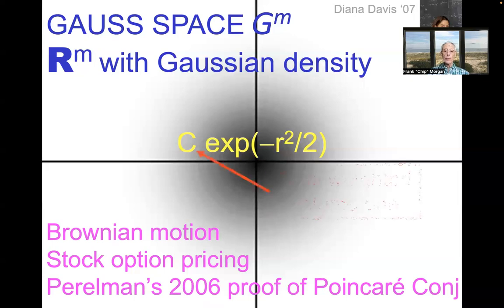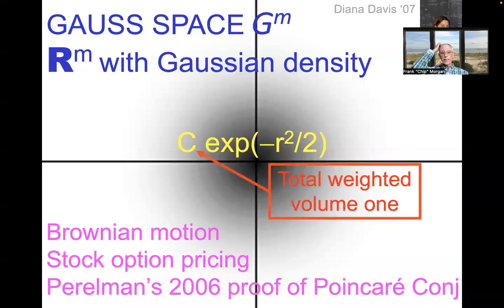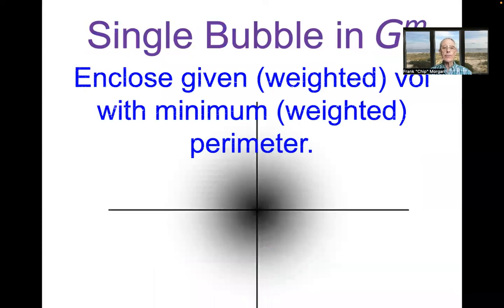So the single bubble problem here, oh, the constant there in front, is just chosen to make the total weighted volume of the space one. A big advantage that this space has over Euclidean space with its crazy infinite volume. So a space in that way already much easier to work with. Now, the single bubble problem here is to enclose given weighted volume with minimum weighted perimeter. So the Gaussian weighting applies both to the volume and the perimeter. So we'd like the volume around the origin where the density is big, and we'd like the perimeter to be far away from the origin where the density is small. And moreover, we still have rotational symmetry in the space and in the density.